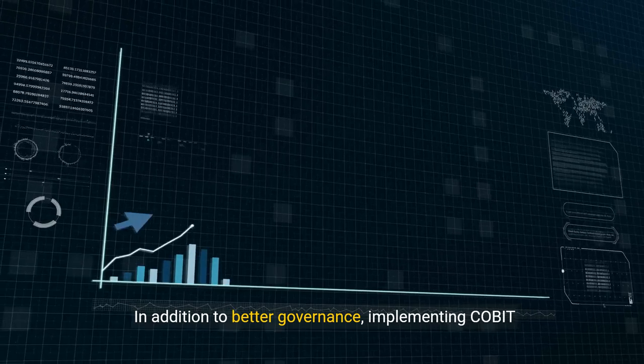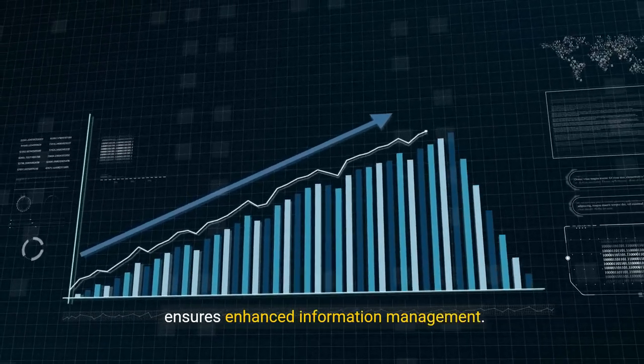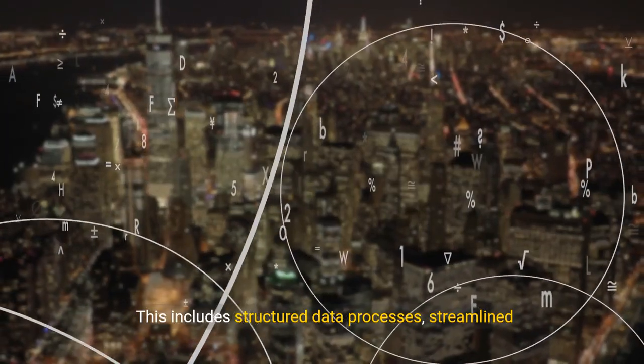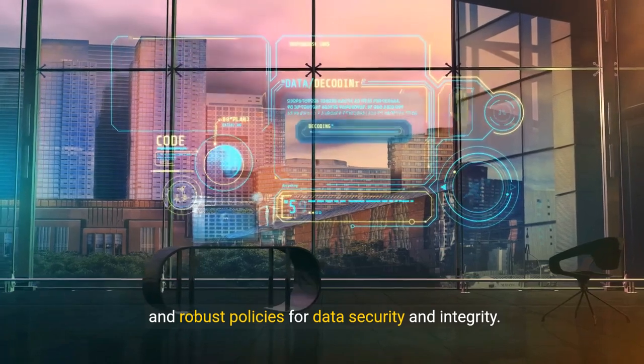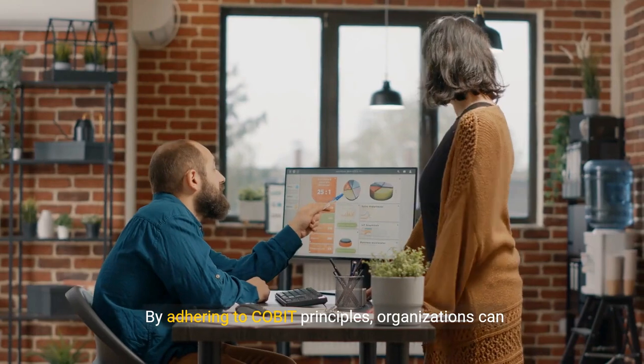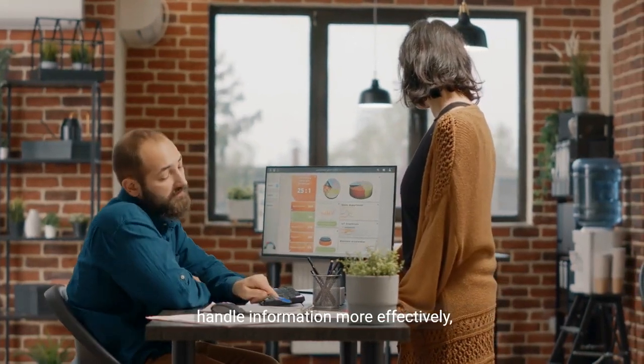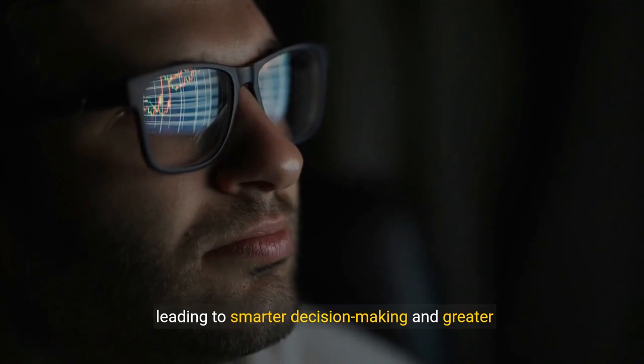In addition to better governance, implementing COBIT ensures enhanced information management. This includes structured data processes, streamlined information flow, and robust policies for data security and integrity. By adhering to COBIT principles, organizations can handle information more effectively, leading to smarter decision-making and greater transparency.